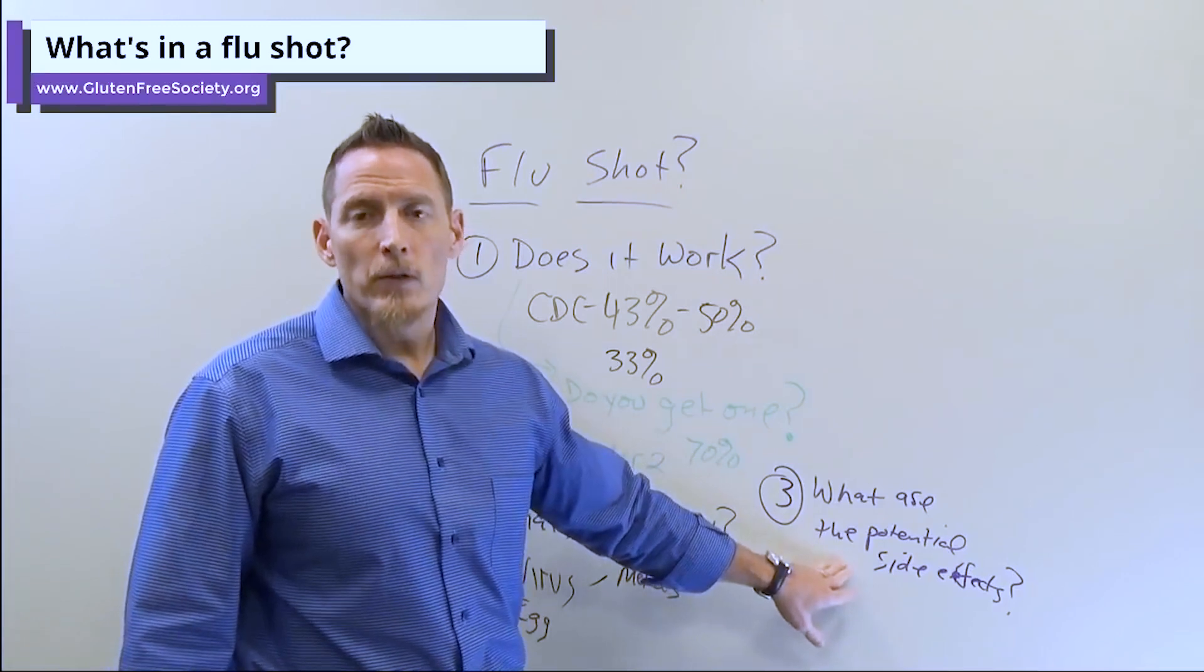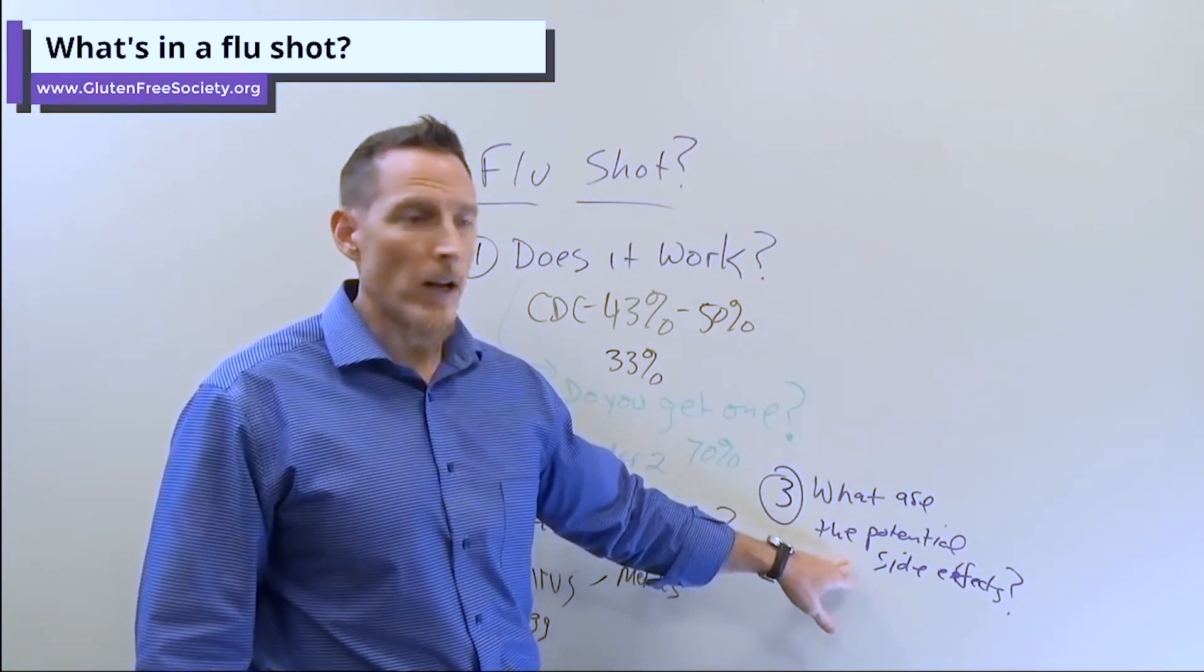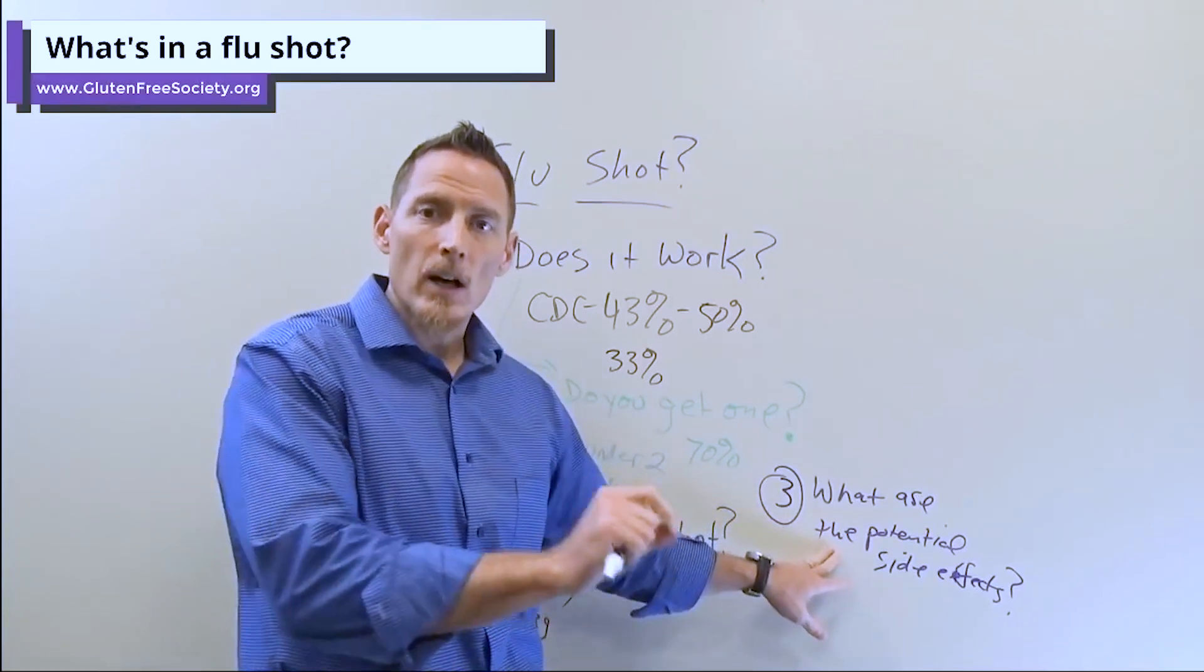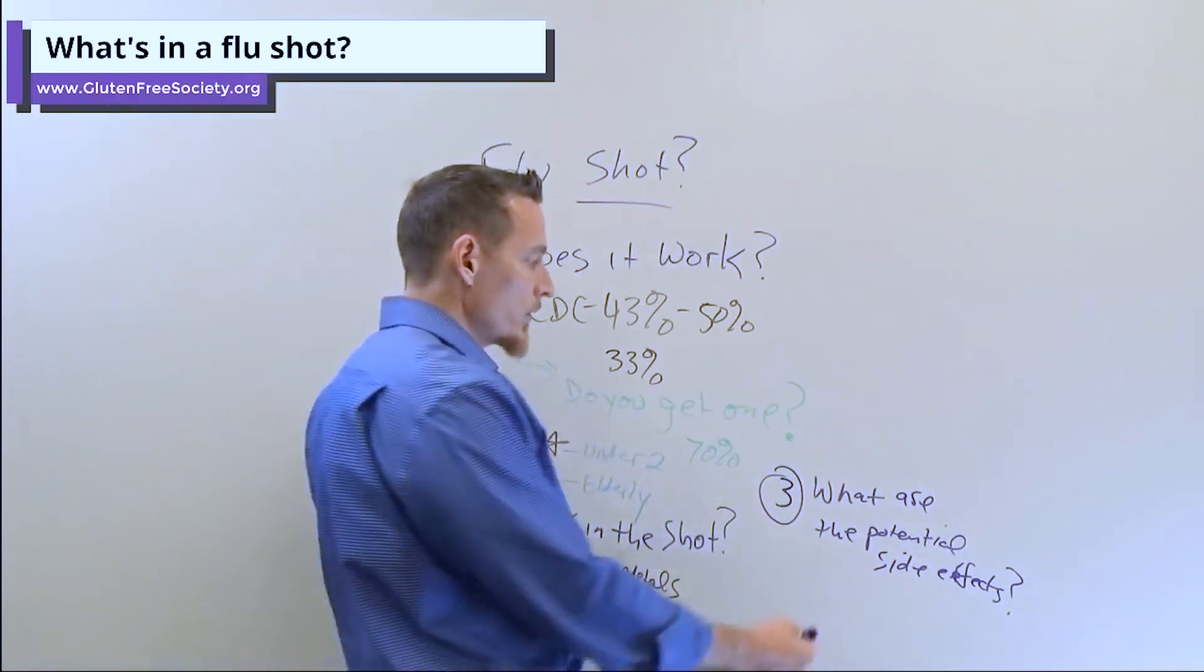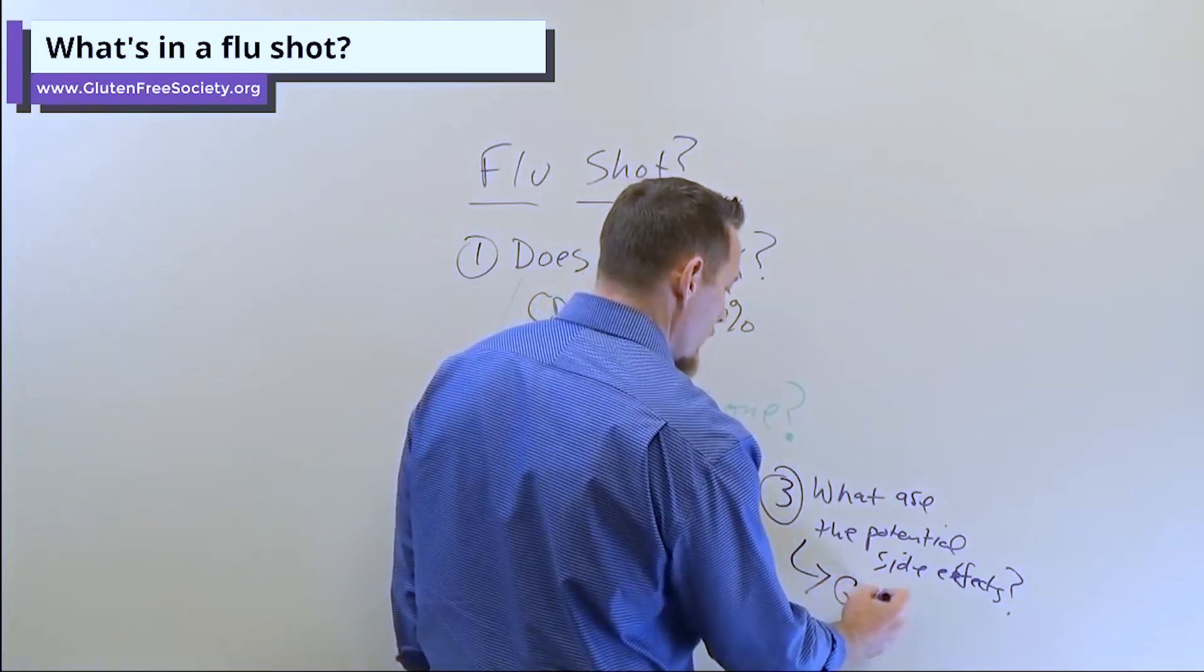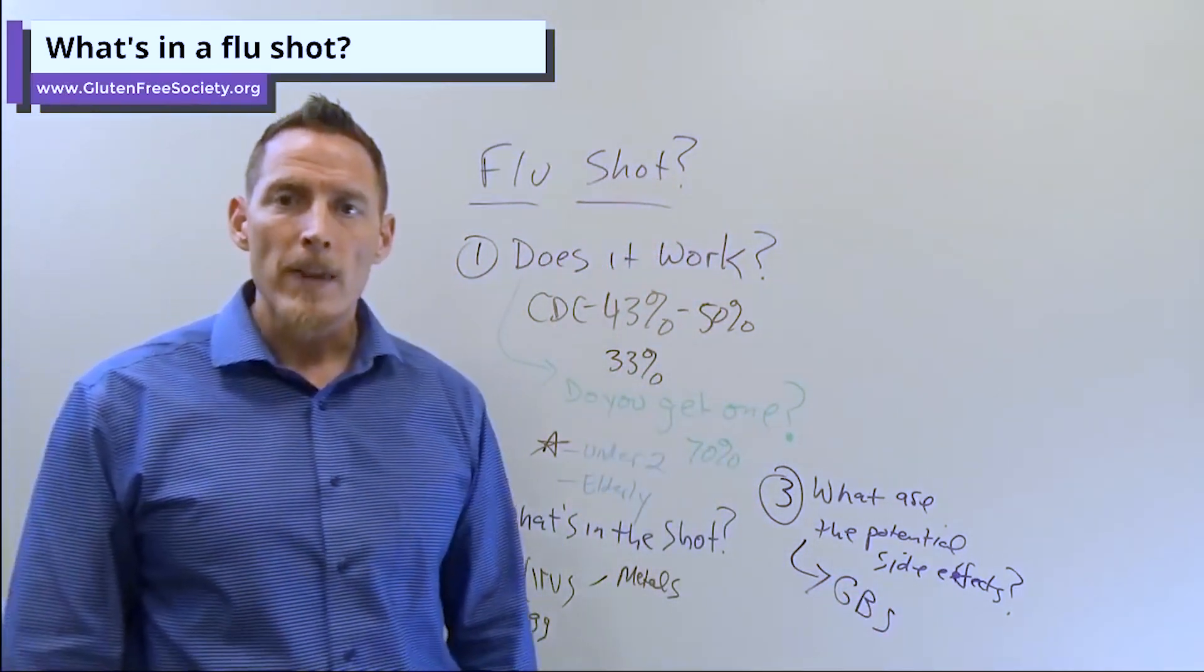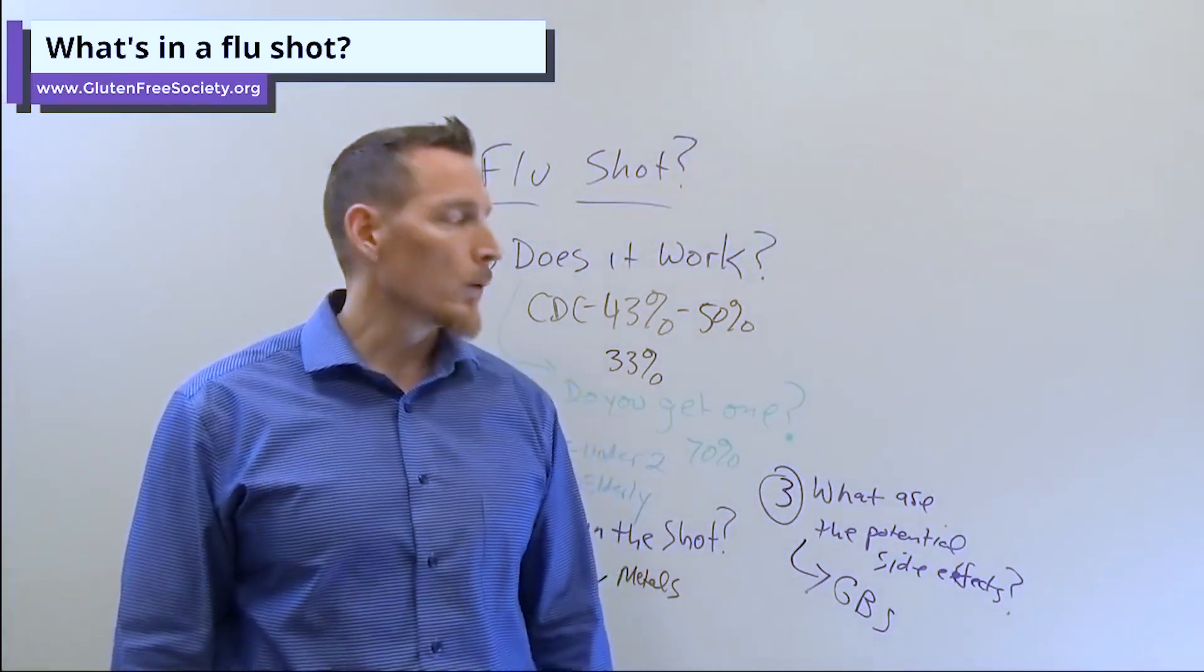One of the side effects - and this doesn't happen to everyone, I want to be very clear - we have vaccine injuries and flu shots certainly create many of them. It's not that everybody who gets a flu shot ends up with these symptoms, but there are risks. One of the risks is an illness, a neurological inflammatory autoimmune illness called Guillain-Barré syndrome, GBS for short.